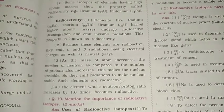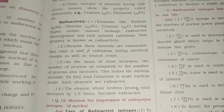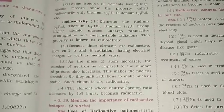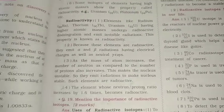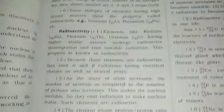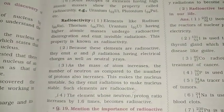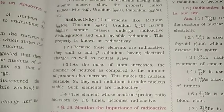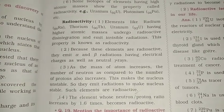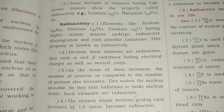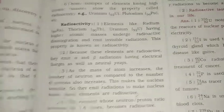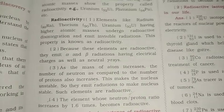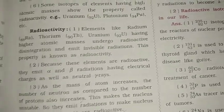Third point: As the mass of the atom increases, the number of neutrons compared to the number of protons also increases. The lower number is the proton number and the upper number is the atomic mass. As the neutron count increases with atomic mass, this makes the nucleus unstable, so these elements emit radiation to make the nucleus stable.